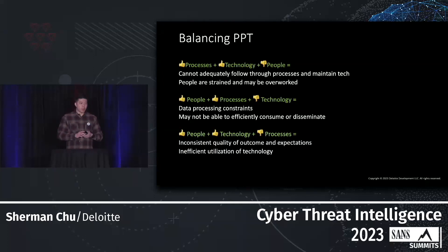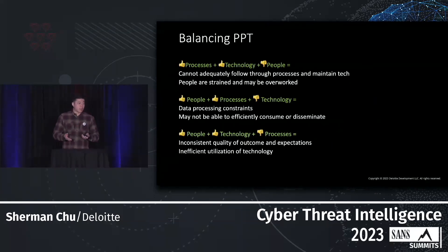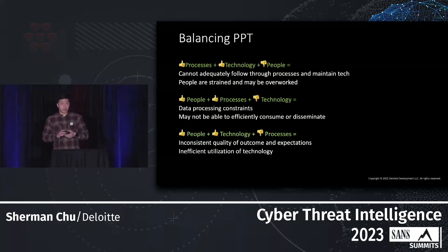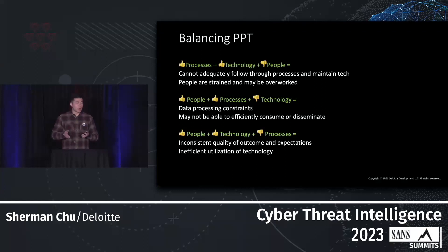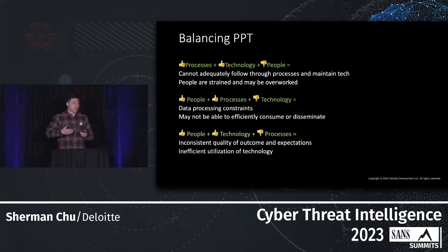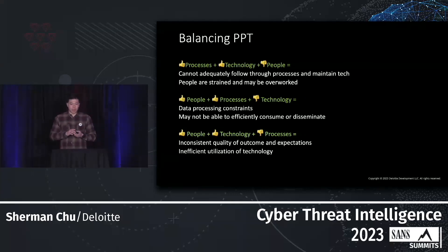Third hypothetical: people and technology but lacking in process implementation. Now you have inconsistent outcomes — you're doing things on a whim. Especially for assessments and analysis, you need structured techniques and processes to provide consistency in your assessments and confidence levels. Without that, your products and output will be inconsistent and may impact your security posture or your credibility as a finished intelligence provider. To sum up: people first — without people there are no processes, and no technology can be actualized.